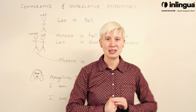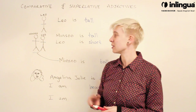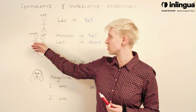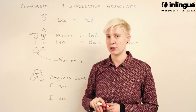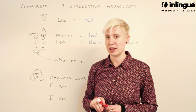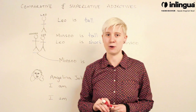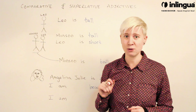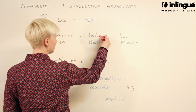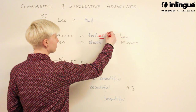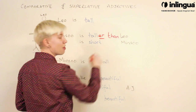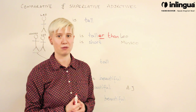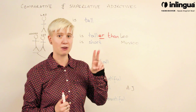Let's have a look at my sentence. Leo is tall, and here I have Minsu is tall. But now I want to compare Minsu's height with Leo's height. You can see that Minsu is taller than Leo. We have two things we need to add to the sentence. The word 'than' is always used in a comparative — it is how we know that we are comparing two things.